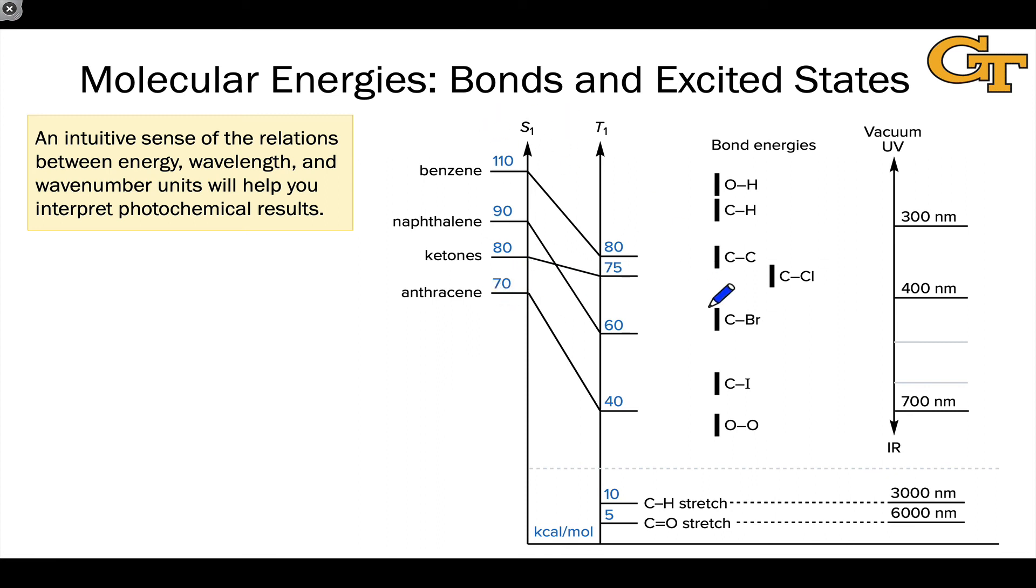And one thing you'll notice from this diagram, which we'll return to later, is that the triplet states are always lower in energy. There's a good reason for this, which we'll explore later in the course. But you can also get a sense of the gaps. They're anywhere from 30 kilocalories per mole, which is among the largest that we see here, to only 5 kilocalories per mole for the ketones. So the singlet-triplet energy gap here you can see is much smaller in general than the singlet and triplet energies relative to zero.